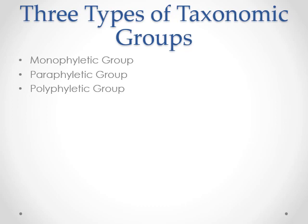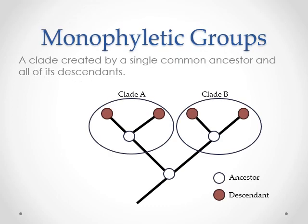What does mono mean? One, single. Poly means many. Para means almost but not quite - like a paralegal is almost but not quite a lawyer. A monophyletic group includes the common ancestor and all of its descendants. This is a monophyletic group. This whole thing - monophyletic. The common ancestor and every one of its descendants.